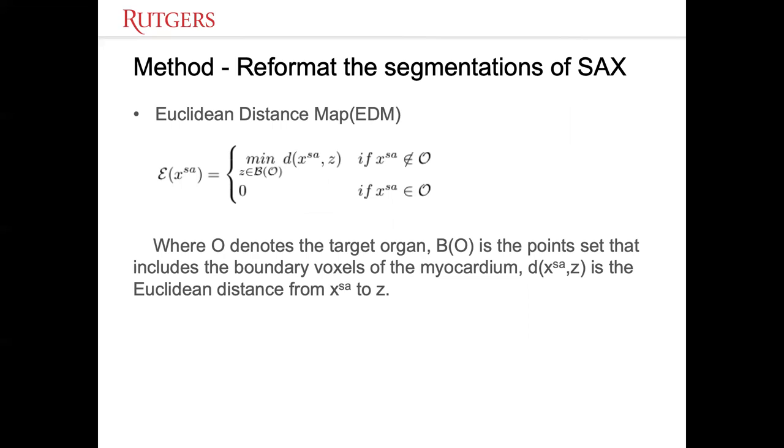O denotes the target organ. B-O is the point set that includes the boundary voxels of the myocardium. D-X-SA-Z is Euclidean distance from X-SA to Z.